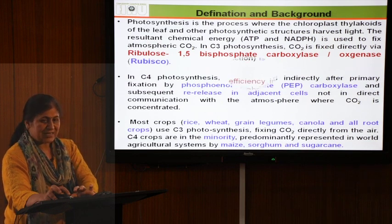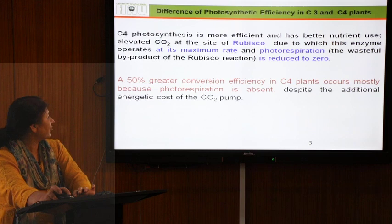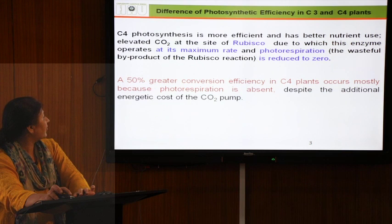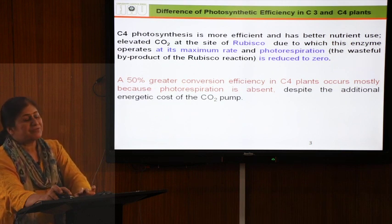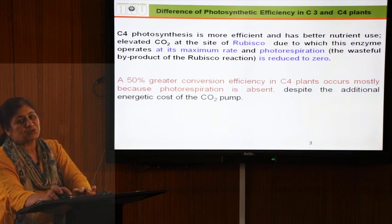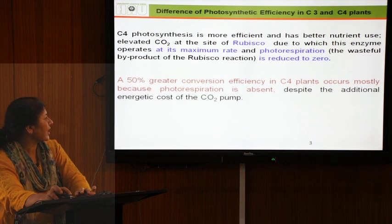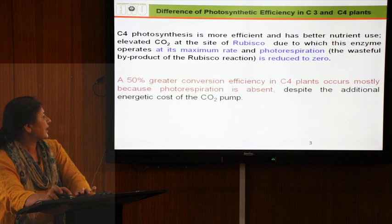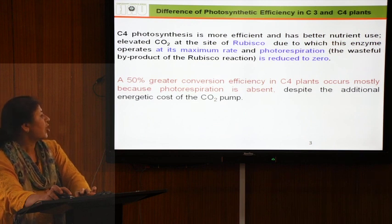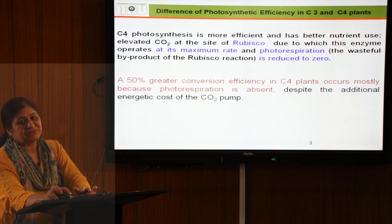C4 plants have high photosynthetic efficiency because during C4 photosynthesis, CO2 is elevated at the site where rubisco works, causing the enzyme to operate at its maximum rate. Additionally, the wasteful process of photorespiration is almost negligible in C4 plants.